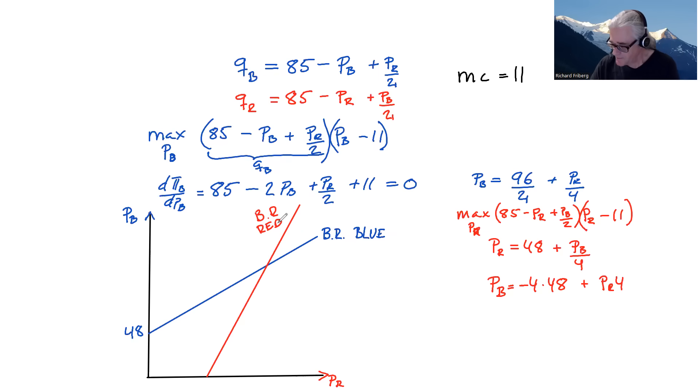Okay, so the equilibrium prices are going to be just as in the case of Cournot where the best response functions intersect. So PR star here and PB star here. So let's find those. Before we do that, let's just clean up a little bit here. Actually take that away as well. So we're seeing what we're doing here.